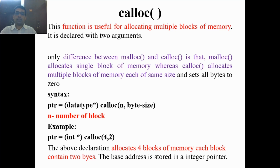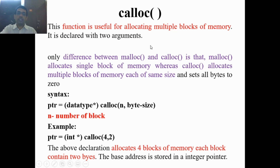The calloc() function allocates multiple blocks of memory, each of the same size, and sets all bytes to zero. calloc() initializes all the memory space to zero, whereas malloc() will not initialize the memory — that is the key difference between the malloc() and calloc() memory allocation functions.